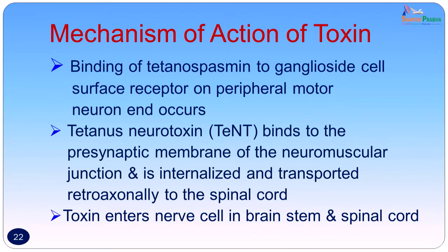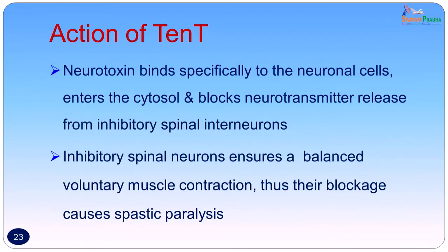Tetanospasmin is the main toxin responsible for the signs and symptoms of tetanus; it is plasmid-mediated. Tetanolysin does not play a role in clinical manifestations, but is responsible for the beta hemolysis seen on blood agar. The peripherally acting neurotoxin may play some role in causing local tetanus. The tetanospasmin binds to the ganglioside cell surface receptor on the peripheral motor neuron, at the presynaptic membrane of the neuromuscular junction, is internalized, and is transported retro-axonally to the spinal cord and brainstem.